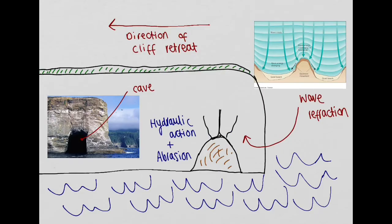Continued erosion through the processes of hydraulic action and abrasion deepens the crack to eventually form a cave, as we can see on the image on the left hand side. This cave is further exposed to erosion through a process called wave refraction, which directs the greatest concentration of wave energy onto the sides of the headland.